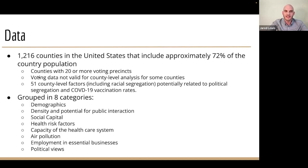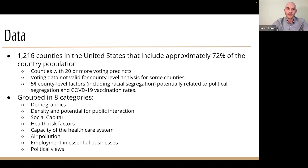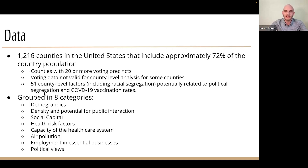In addition to voting data, we had 51 county-level factors including racial segregation — the same 50 that Gerard used for his research on racial segregation versus COVID outcomes, plus one more. All of these are still potentially related to political segregation and COVID-19 vaccination rates.